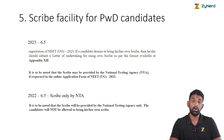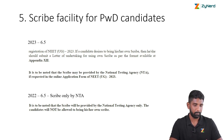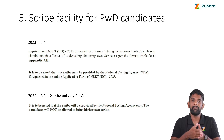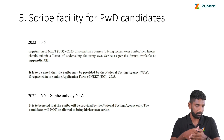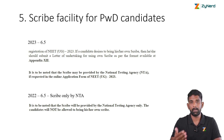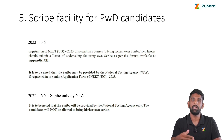Next, for the scribe facility for PWD candidates, this year the candidate can bring their own scribe. When they bring their own scribe, they have to submit a letter of undertaking, and the format for this is given in Appendix 12. It is also noted that a scribe may be provided by NTA if requested in the online application form. So if you do not have a scribe, you can request one through the application form and NTA will provide one for you.